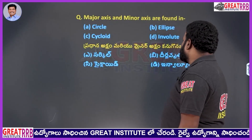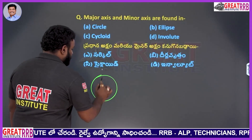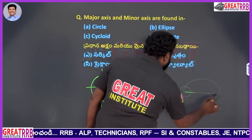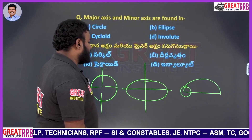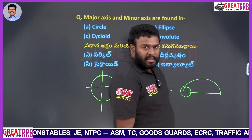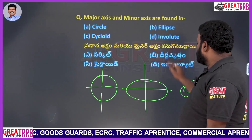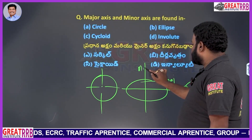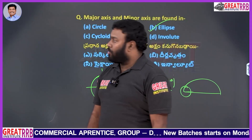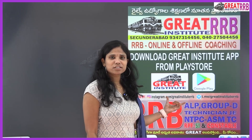Major axis and minor axis are found in: A) circle, B) ellipse, C) cycloid, D) involute. A circle only needs a center line; cycloids and involutes are a different family of curves. Major axis and minor axis are specifically properties of an ellipse. So option B, ellipse, is the right answer for the given question.